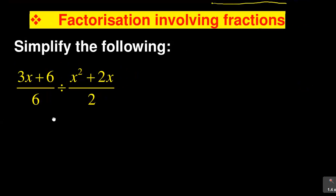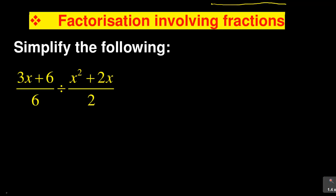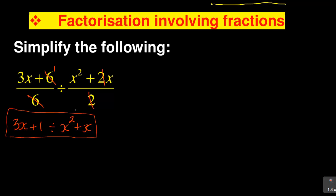Please do not be tempted to do this. What students usually do is look at that 6 in the numerator and the 6 in the denominator and think they can cancel them out, leaving 3x + 1. Then they do the same on the second fraction, looking at the 2 and canceling it, ending up with divided by x² + x. That is how tempting it is — but remember, this is wrong.